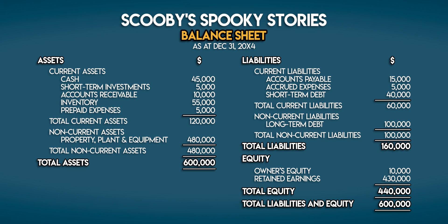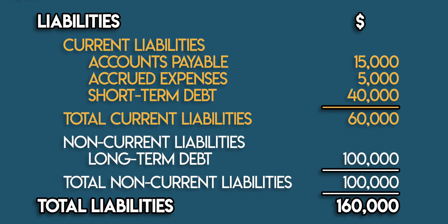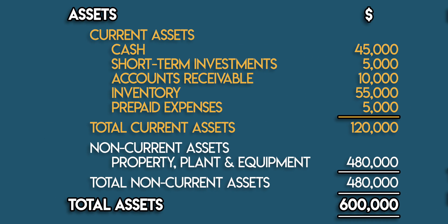Liquidity ratios are nice because we can find all of these numbers on the balance sheet. This balance sheet gives us a snapshot of our bookstore's assets, liabilities, and equity at a point in time. Current liabilities are on the right — these are the business's short-term debt obligations expected to be settled within one year, made up of accounts payable, accrued expenses, and short-term debt, adding up to $60,000. Current assets are on the left, totaling $120,000.